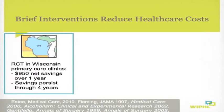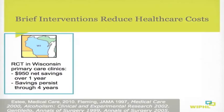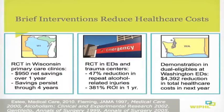We also know that brief interventions reduce healthcare costs. One randomized control trial conducted in Wisconsin primary care settings found nearly $1,000 in net savings over the next year. Most of those savings accrued because of reductions in emergency department visits and hospitalizations, and those savings persisted at least through four years. In both studies, we saved about $4 in the next year for every dollar initially spent providing services.